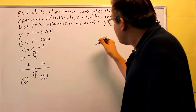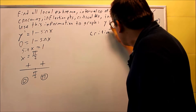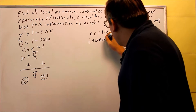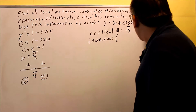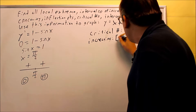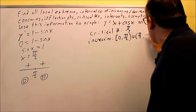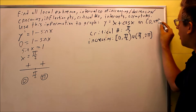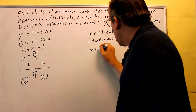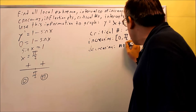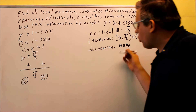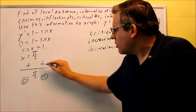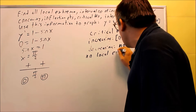So the critical number is pi over 2. The intervals of increasing are from 0 to pi over 2 and from pi over 2 to 2 pi — we include the endpoints since we have a closed interval. Decreasing is none, because we don't have any negatives. There's no relative max and no relative min because there's no change in sign, so no local extrema.